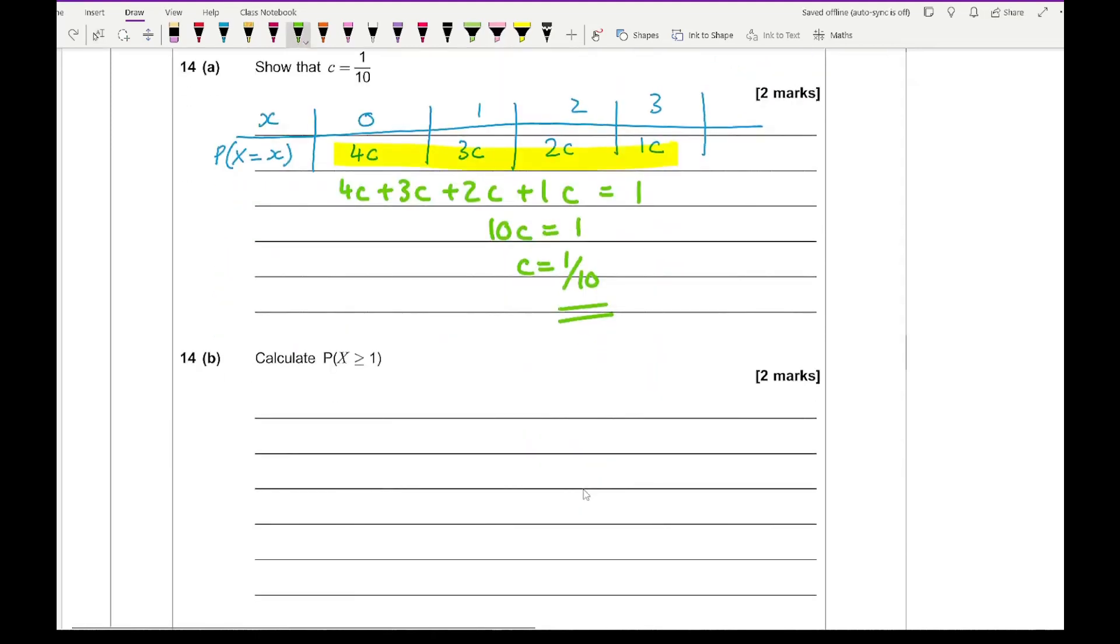For B it says calculate the probability that x is greater than or equal to 1. I can convert each of these, so that's going to be 4/10, 3/10, 2/10, and 1/10. The probability of x being greater than or equal to 1 is basically this plus this plus this, so it's going to be 3/10 plus 2/10 plus 1/10, which is 6/10 or I can write it as 3/5 or 0.6. Any of those would be absolutely fine.